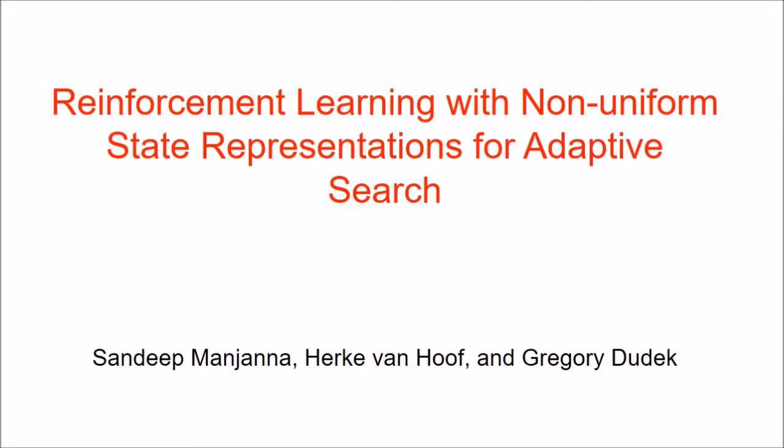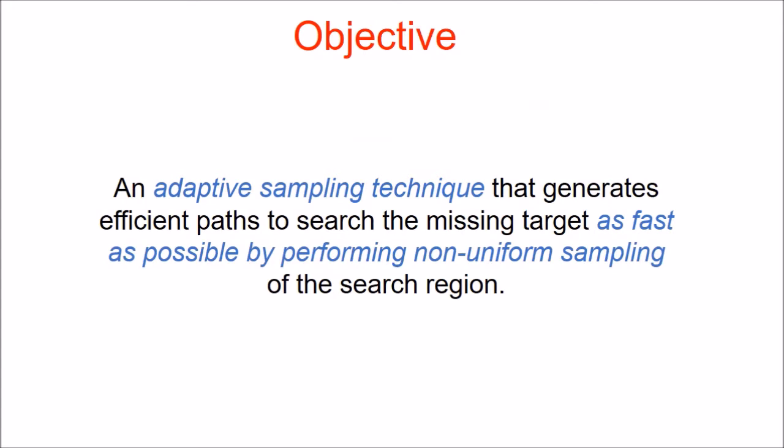Reinforcement learning with non-uniform state representations for adaptive search. In this paper, we introduce an adaptive sampling technique that generates efficient paths to search the missing target as fast as possible by performing non-uniform sampling of the search region.